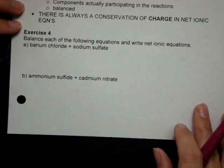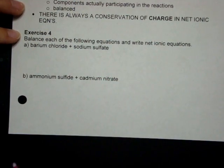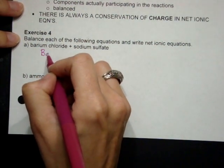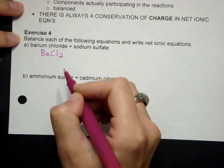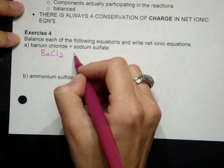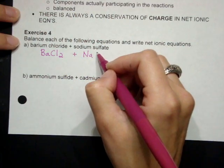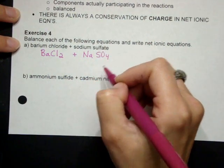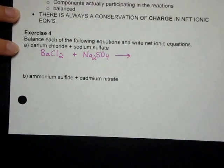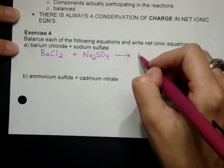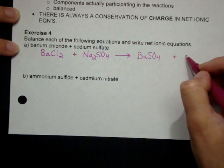So let's take a look at exercise four. Balance each of the following equations and write net ionic equations. We have barium chloride. Ba is a plus two, and chloride is a minus one, so that's BaCl2. Then sodium sulfate is Na, it's a plus one, and then sulfate is a minus two, so we need two sodiums. Again, we're talking about a double replacement reaction. So we have barium sulfate and we have sodium chloride.